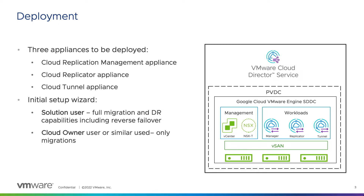After choosing the right data engine based on the permissions available, you need to provide the Cloud Director service URL and the system administrator user to connect to it and register the VMware Cloud Director availability plugin. After completing the remaining steps, your instance is ready to receive its first replication. For more details about the deployment and the initial setup of VMware Cloud Director availability, please refer to the videos dedicated to setting up an environment that we have already published on our channel.